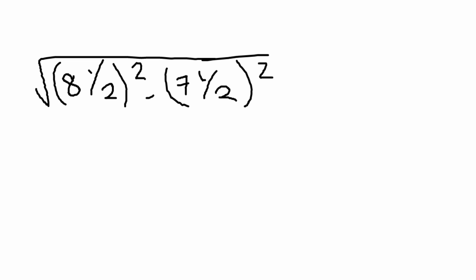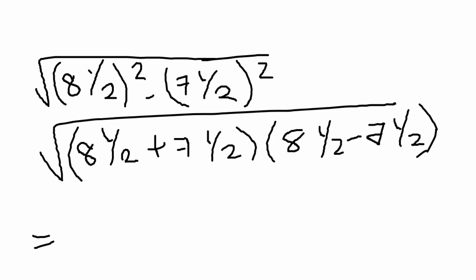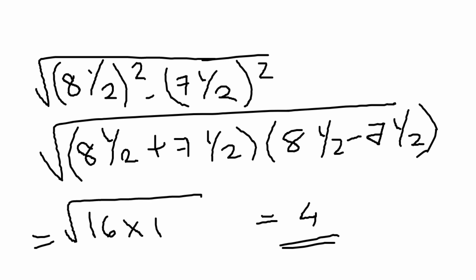Next question: find the square root of (8½)² minus (7½)². Inside the root, we have a² minus b², and we know that a² minus b² equals (a+b)(a-b). So we can write it as (8½ + 7½) into (8½ - 7½). Now, 8½ plus 7½: 8 plus 7 is 15, and half plus half is 1, so 15 plus 1 is 16. And 8½ minus 7½ is 1. So we get the square root of 16 into 1, which is the square root of 16, equal to 4.